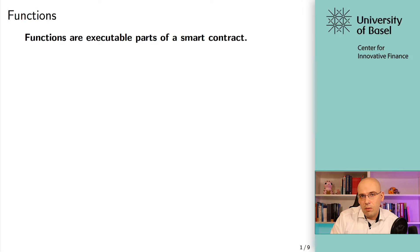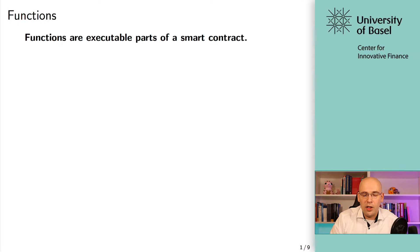So we create a custom function where you're saying: whenever this gets invoked, whenever somebody interacts with this function — usually by sending a transaction to the blockchain, to this specific contract address, and by declaring that he or she wants to invoke this specific function — then whatever we specify in the function body actually happens. That's the general idea, and that's the way these smart contracts actually get interactive.